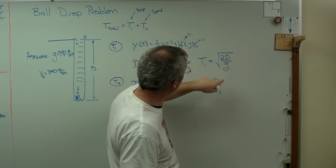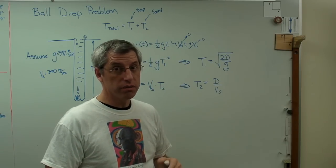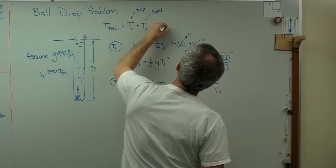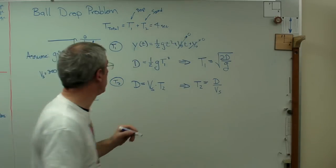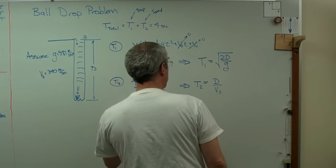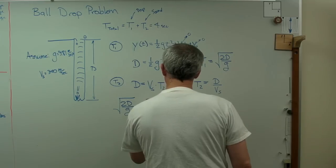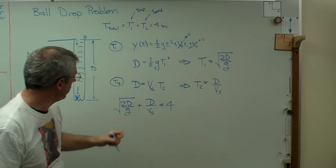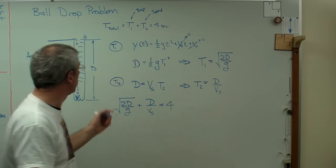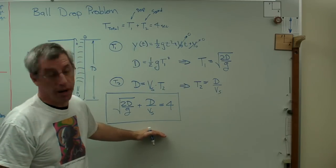I've now got expressions for time one and time two. I don't know what time one is, I don't know what time two is, I don't know d. I've got three equations, three unknowns, so I should be able to solve that. I know that this equals four seconds, so I can write: square root of 2d over g plus d over vs equals 4. That's one equation and the only thing I don't know in it is d.